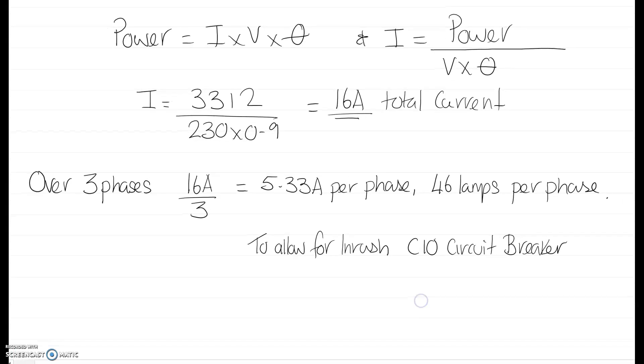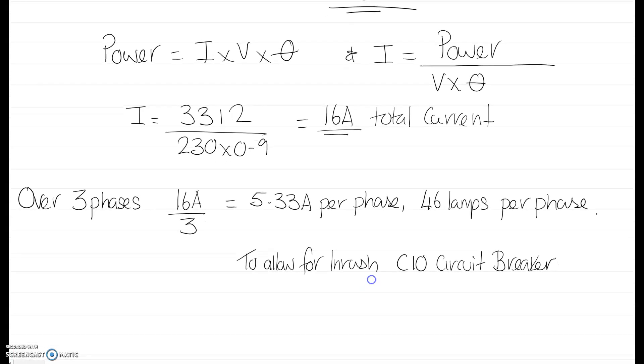Now that's total. Obviously we've got 138 fittings, so we're going to need to divide it up. My advice is to keep it over three phases. 16 over 3 gives us 5.33 amps per phase, and that's 46 lamps per phase, so 46 tubes. To allow for a total inrush, I would probably go for a C10 circuit breaker. Over three phases, and the beauty of doing it over three phases is should you lose a phase in an emergency, you've got another two phases to keep you going.